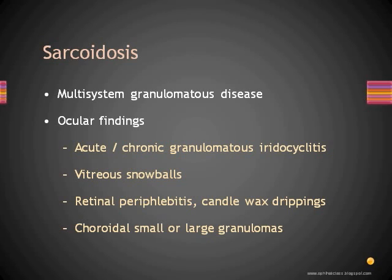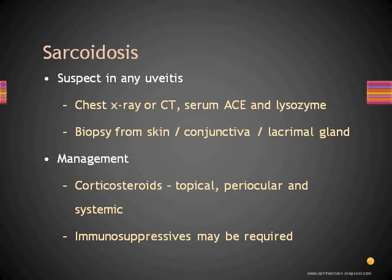Retinal periphlebitis can present as candle wax drippings — a term used for the extensive exudation seen around the retinal vessels. The choroid can show small or large granulomas. Sarcoidosis should be suspected in any case of uveitis. Diagnosis is by chest X-ray or chest CT, serum ACE, and lysozyme levels. Biopsy can be diagnostic from any skin lesion, conjunctival follicles, or a lacrimal gland biopsy. Non-caseating granuloma confirms the diagnosis. Management includes corticosteroids and immunosuppressives.